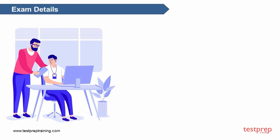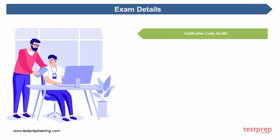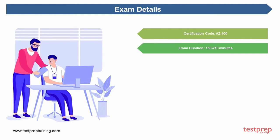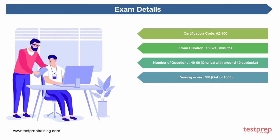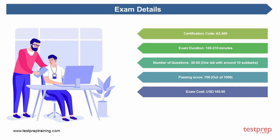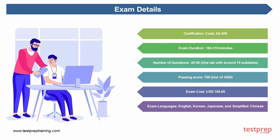Exam details: The certification code is AZ-400. Exam duration is 150 to 210 minutes. Number of questions is 40 to 60, with one lab containing around 10 subtasks. Passing score is 700 out of 1000. Exam cost is 165 US dollars. Exam languages are English, Korean, Japanese, and Simplified Chinese.